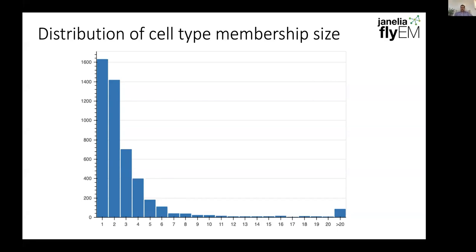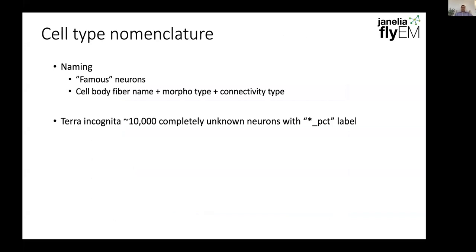We can find neurons that have very similar innervation patterns to brain regions, which you can think of as a higher-level grouping. In terms of naming these neurons, we tried as best we could to use any existing neuron names from the literature — fly neurons with confocal image data where people have given them cell types. For neurons that are not known, our current release combines the cell body fiber name with a morphological type identifier and a connectivity type identifier if needed. This needed to be applied to about 10,000 completely unknown neurons in the terra incognita, labeled PCT for putative cell type. We hope to rename many of these neurons using the primary brain region that the neuron innervates.